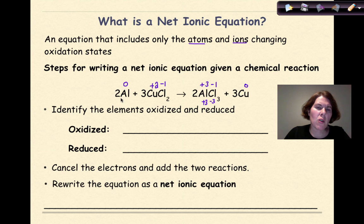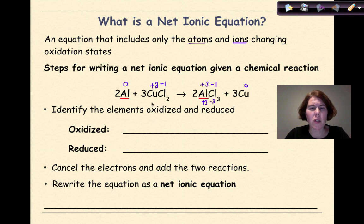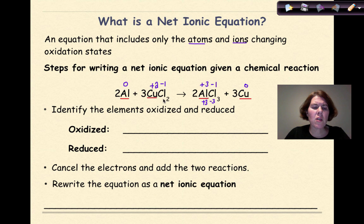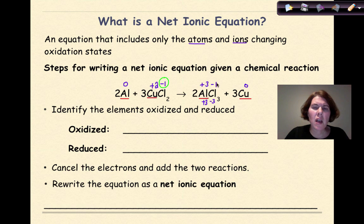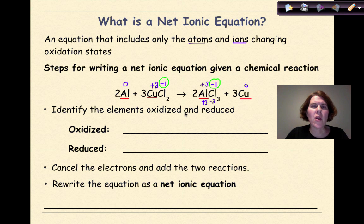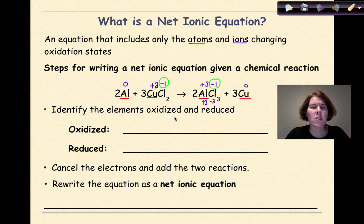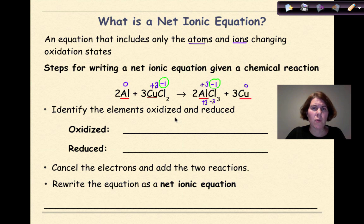Then I need to go through and see what is changing oxidation states and what isn't. Aluminum is going from zero to plus 3, so that's going to be involved in our net ionic equation. Copper is going from plus 2 to zero, so that's going to be involved. But if we look at the chlorine, it has a charge of minus 1 on the reactant side and minus 1 on the product side, so we're going to call that a spectator ion. Therefore, in our final net ionic equation, that's not going to be involved, because we're only looking at what is changing oxidation states.